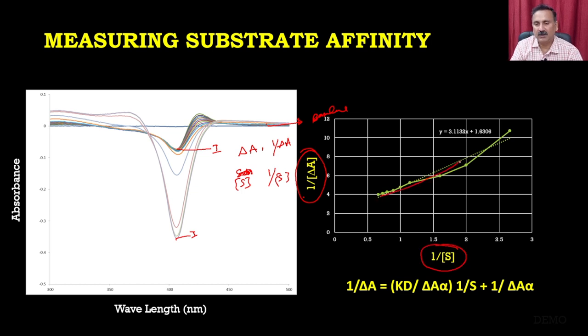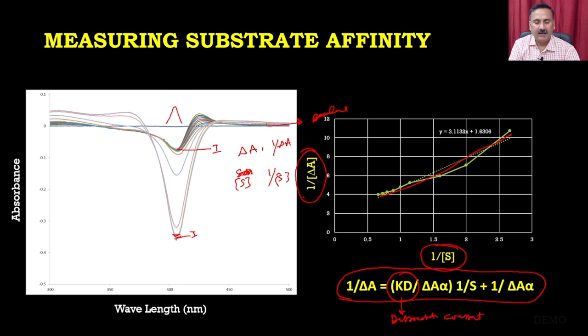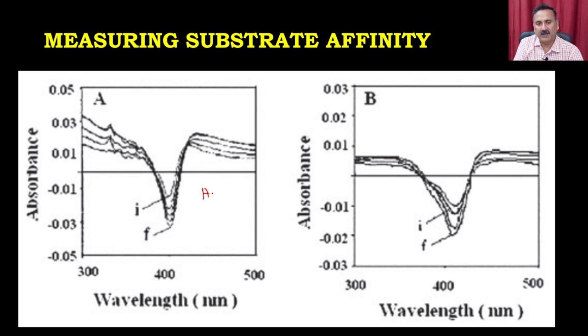The data collected shows a baseline and a final curve at saturation. From each spectrum, you calculate ΔA — the depth of the absorbance dip. Then plot 1/ΔA versus 1/[substrate] to get a linear plot. Using the formula, you can calculate the KD value (dissociation constant). The real data shown is from H₂O₂ binding to a hemoprotein. A demo clip is included to explain each step of performing difference spectroscopy in the laboratory.